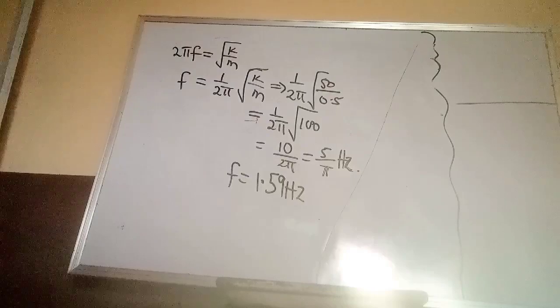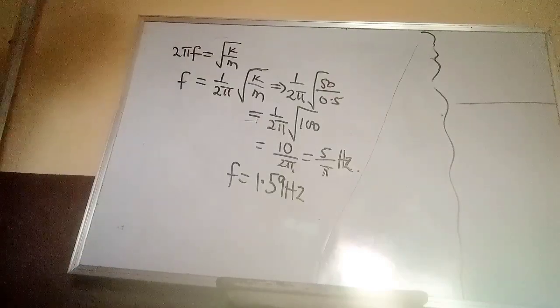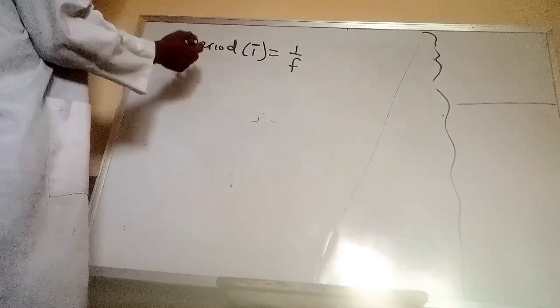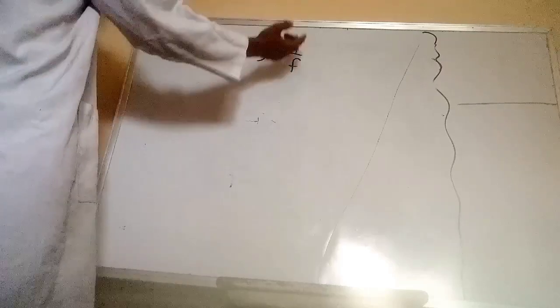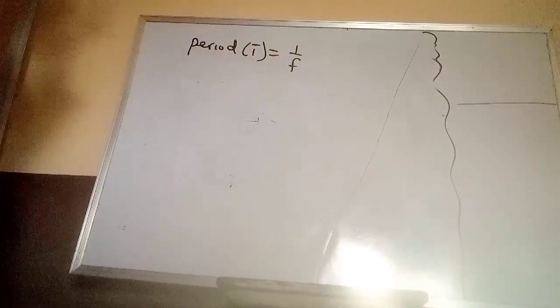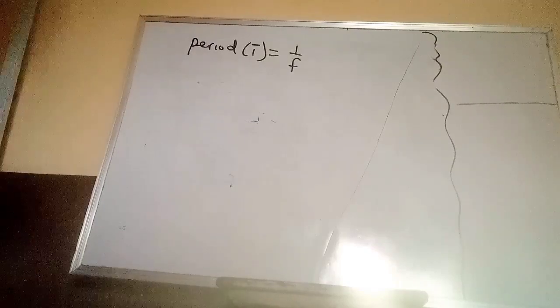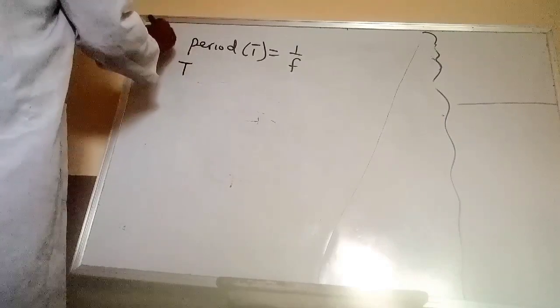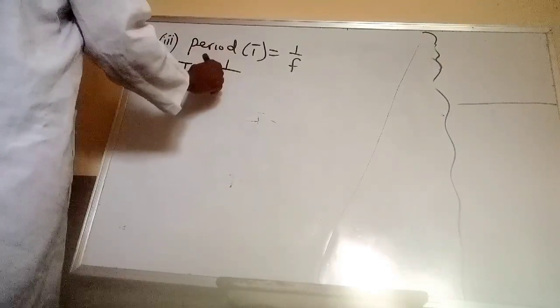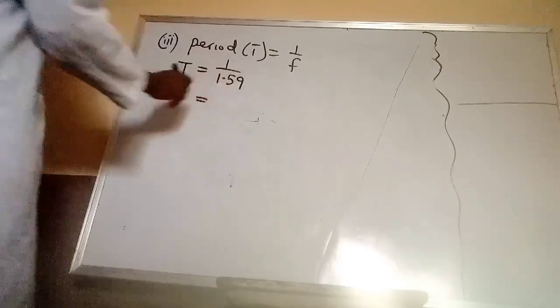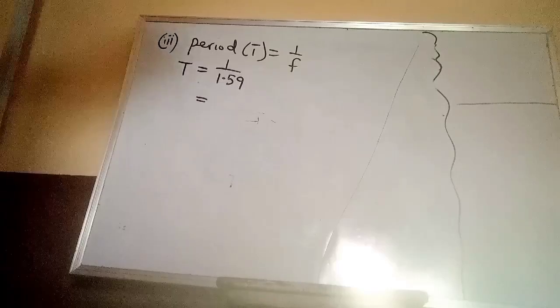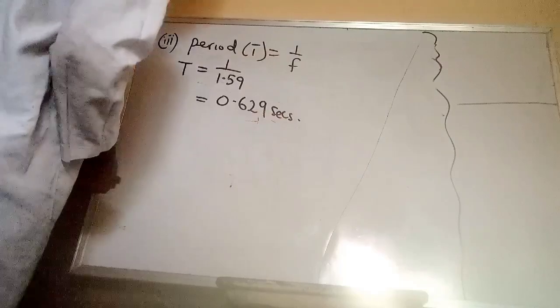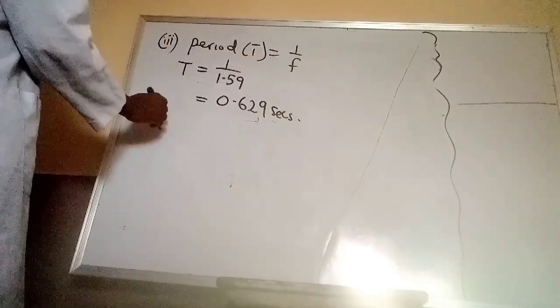Now, the third question says we should find the period of oscillation. Period of oscillation is found using 1 over f because period is the reciprocal of frequency and vice versa. That means period, that is number 3, will be equals to 1 over 1.59. And that will give us, by using calculator, 0.629 seconds. That is the period.